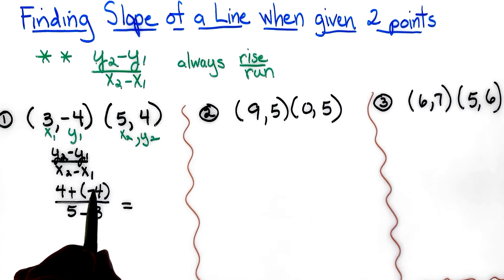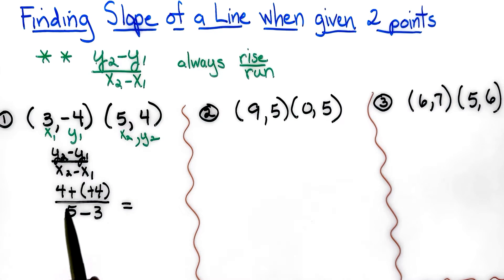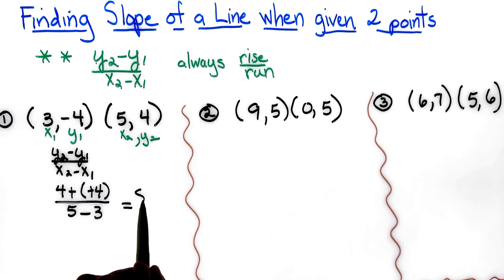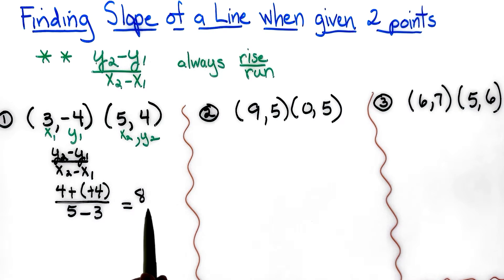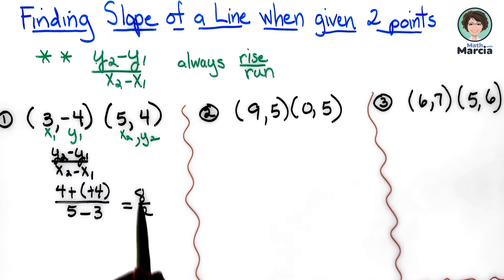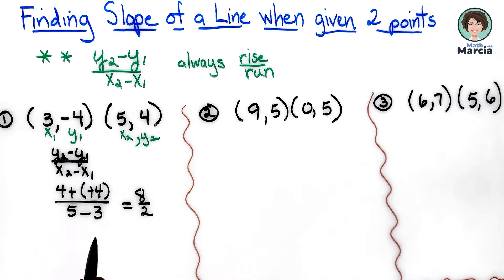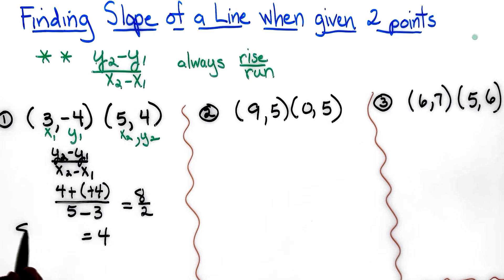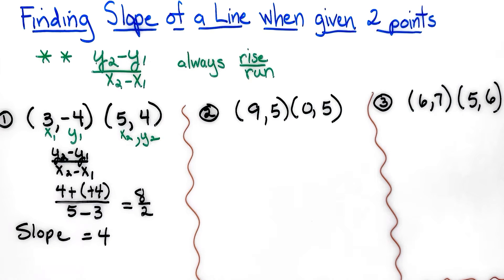Now in order to simplify, when you subtract you always add the opposite, so you end up with 4 plus 4, which is 8, and 5 minus 3, which is 2. We can simplify that: 8 divided by 2 is 4, so our slope is equal to positive 4.